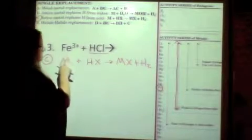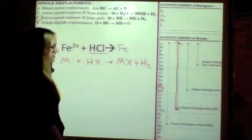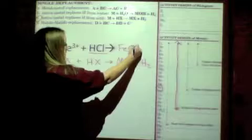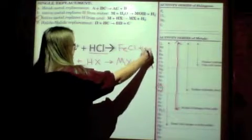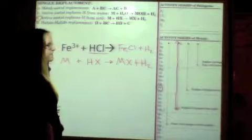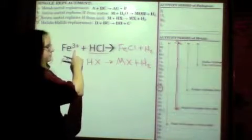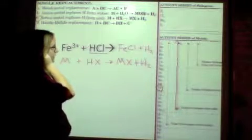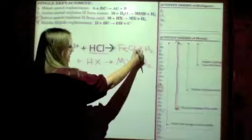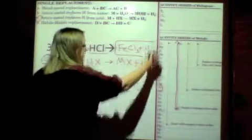So our M in this case is Fe. X in this case is Cl plus H2. Final step, cross charges. I told you the charge of Fe over here is 3. Chlorine is always 1. So Fe is 3. Cl is 1. Cross, you get FeCl3 plus H2.